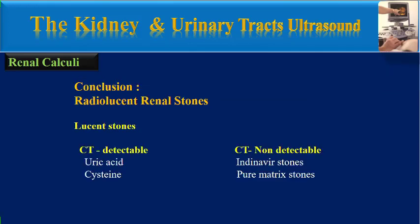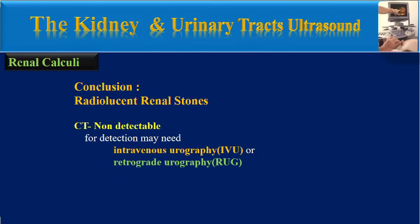In conclusion, radiolucent renal stones can be classified into two groups: CT detectable, including uric acid and cysteine stones, and CT non-detectable, including indinavir stones and pure matrix stones. For detection of radiolucent CT non-detectable renal stones, intravenous ureterography or retrograde ureterography may be needed.